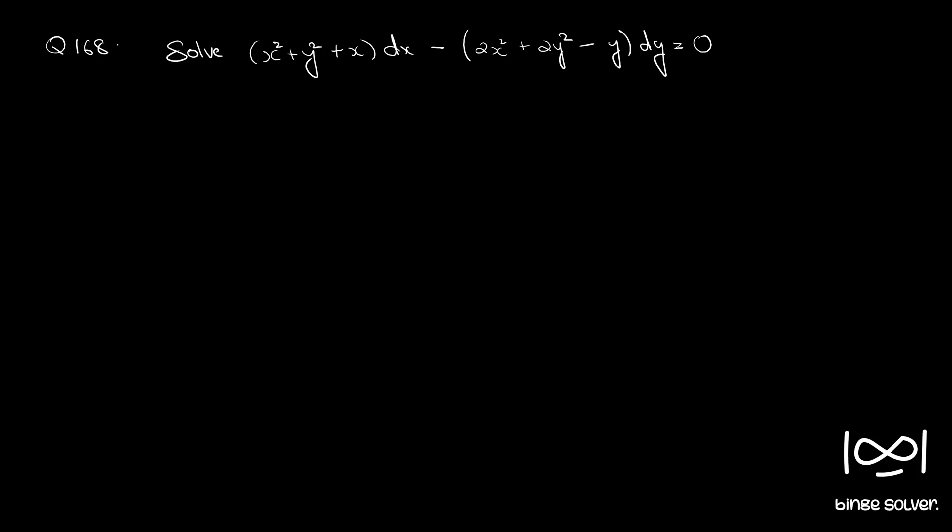Question number 168. Solve x square plus y square plus x dx minus 2 x square plus 2 y square minus y dy equal to 0.